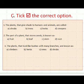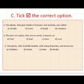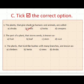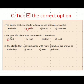Now question number C — choose the correct option. Plants that give shade to humans and animals are called trees — the answer is tree. The part of a plant that stores the seed is known as — not a seed, not a leaf, not a root — the answer is fruit.